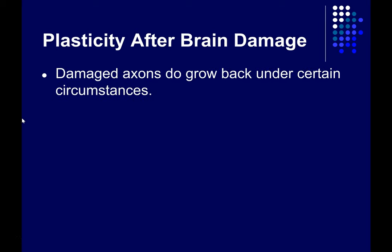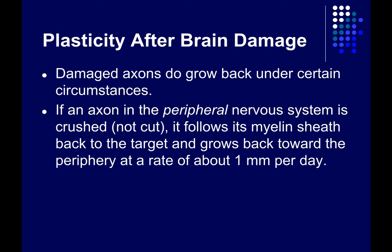That said, damaged axons do grow back under certain circumstances. If an axon in the peripheral nervous system is crushed — as opposed to cut — it can follow its myelin sheath back to the target and generally grows back toward the periphery at a rate of about one millimeter per day. Cut neurons can also sometimes regrow. You've heard of people losing a hand or a finger and having it reattached — they will regain some or most of the control and somatosensory input from that part of the body. Generally the surgeon will reattach the nerve itself, and while the axons may not grow back into the exact myelin sheath they were connected to before, neurons can sometimes regrow through the cut and continue following the myelin sheath of another axon to the target.